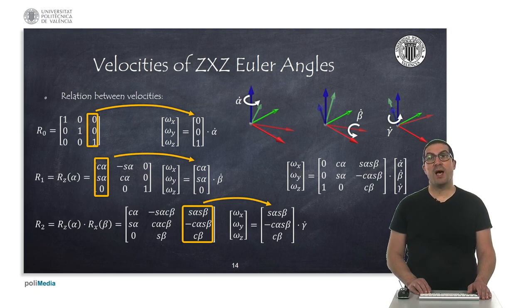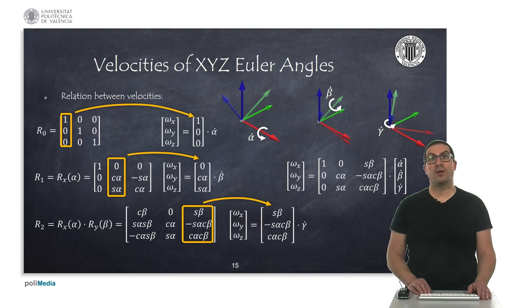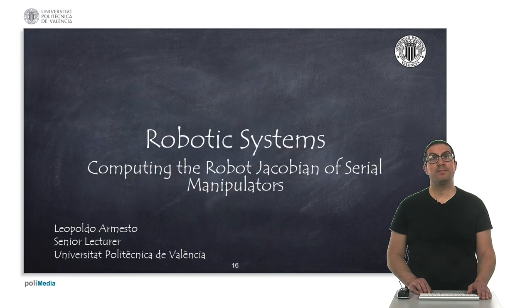By combining these angular velocities, we can obtain the matrix T that relates Euler angle velocities with angular velocities. As you already know, the representation of Euler angles is not unique and therefore there are multiple ways to obtain the matrix T that relates those velocities. Here I also show the formulas for another Euler angles representation, specifically the XYZ representation, which is the one used by CoppeliaSim software and is equivalent to the roll-pitch-yaw representation. In this presentation, I have explained how to compute the robot Jacobian of a serial manipulator. Thank you very much.